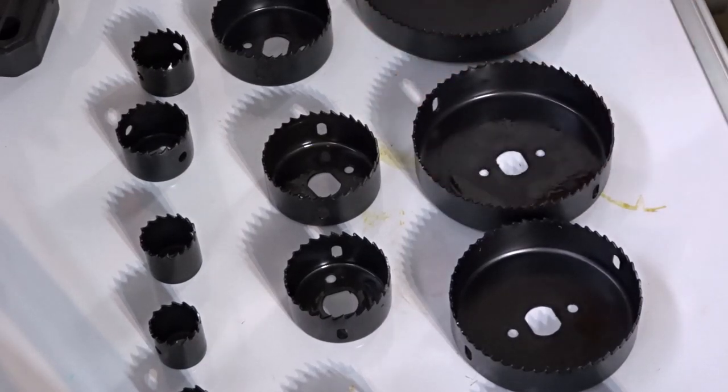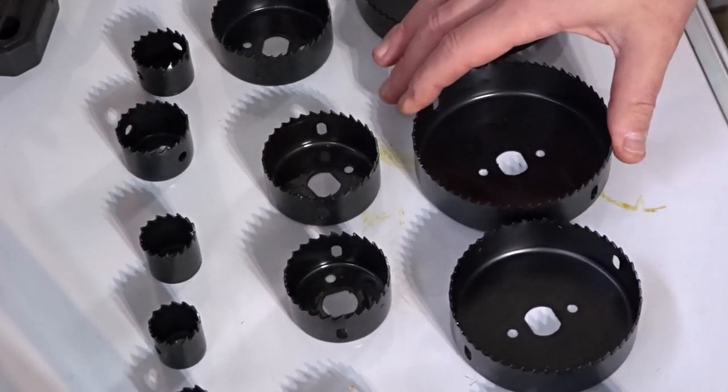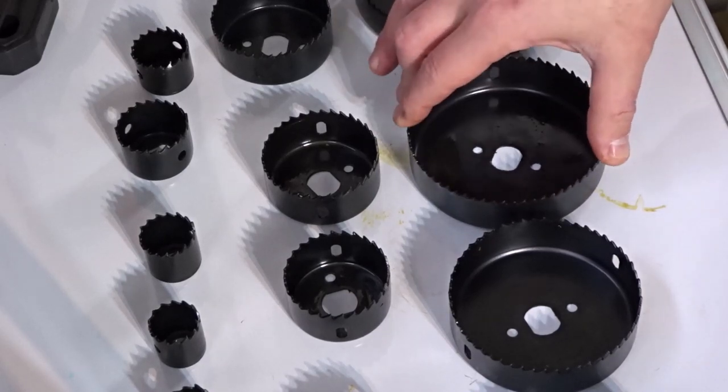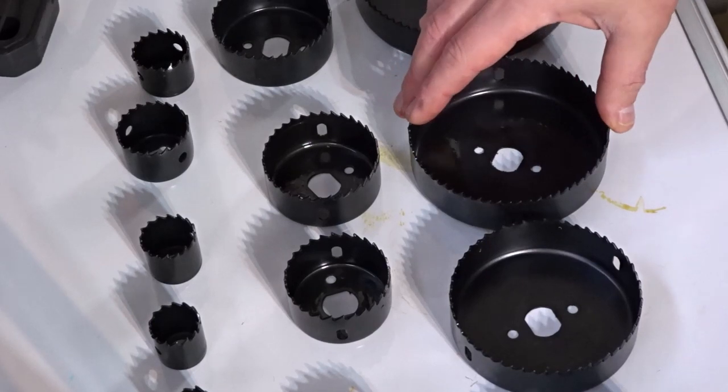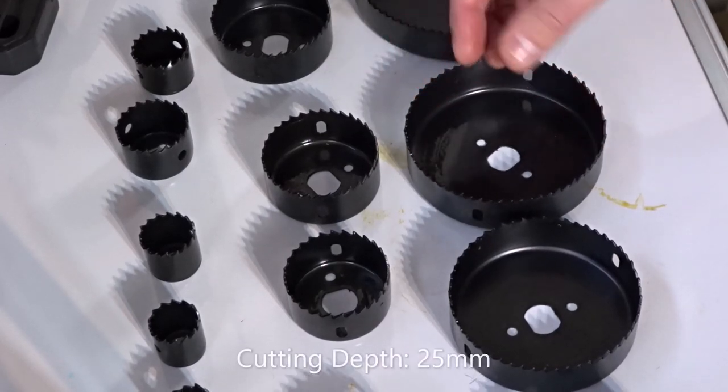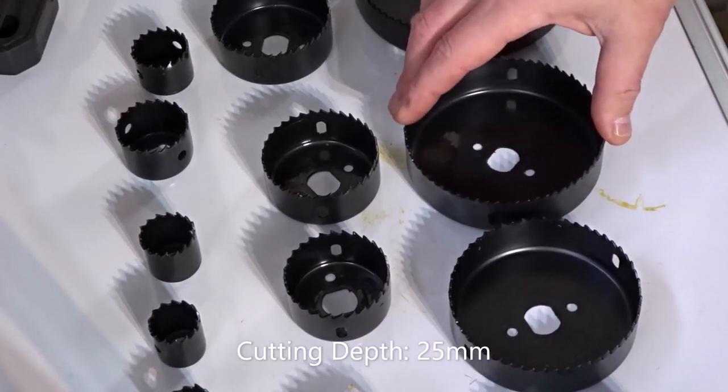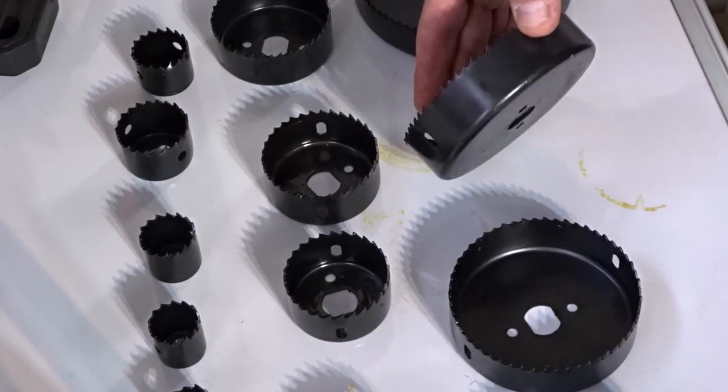With these it's recommended to go up to about a thousand RPM when using them, and that is to minimize wear and tear on the blades. The cutting depth is around about an inch deep or 25 millimeters.